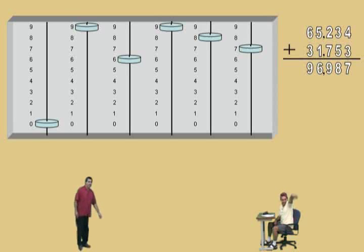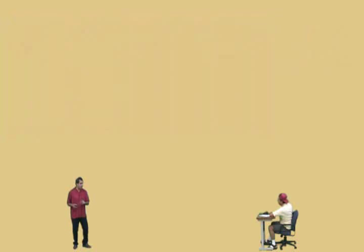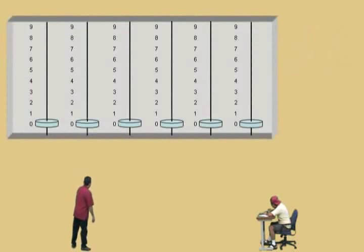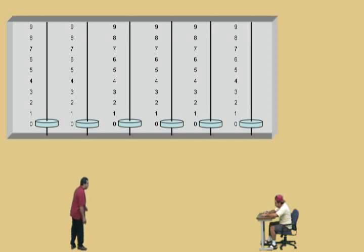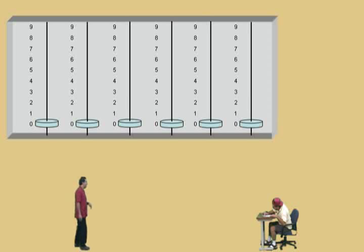Now that we're warmed up, we're going to move to another problem that does require some carryover, so don't get scared. This time, what we're going to do is enter into our abacus seven hundred and thirty-five thousand seven hundred and ninety-six.